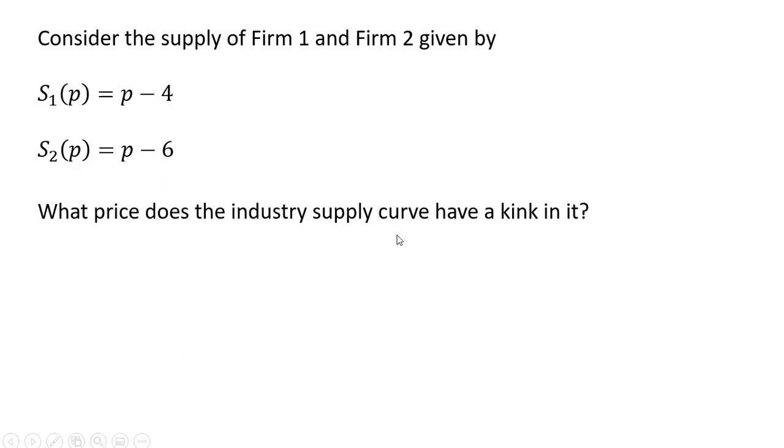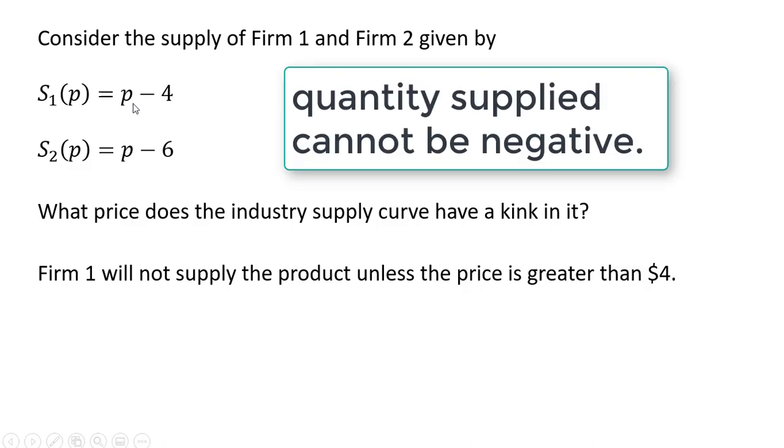What price does the industry supply curve have a kink in it? First note that Firm 1 will not supply the product unless the price is greater than $4. If the price is $3, the quantity supplied here will be 0.